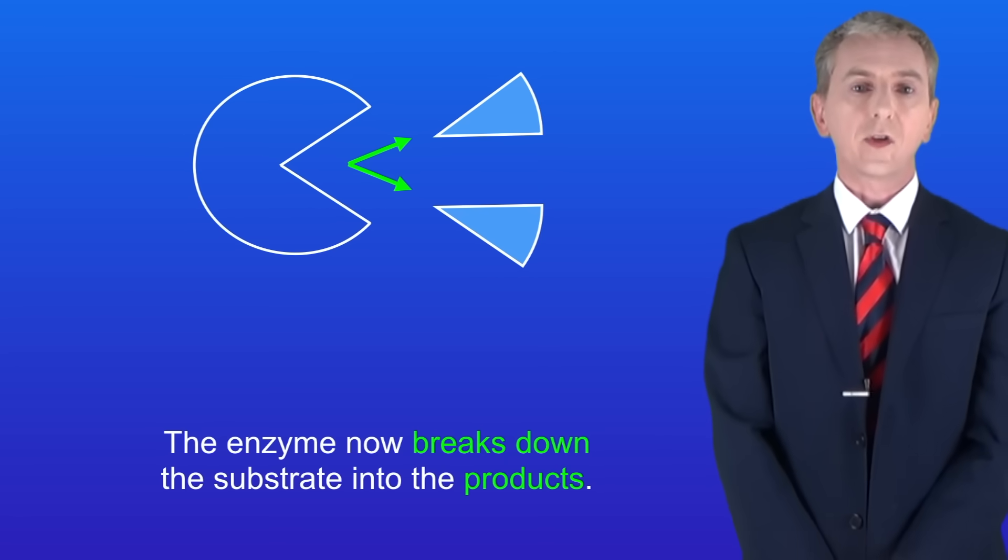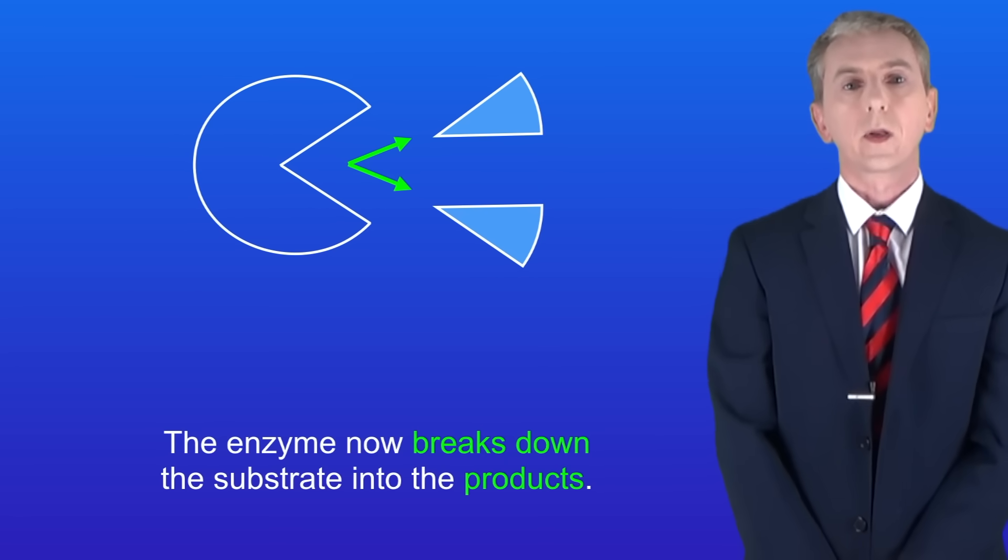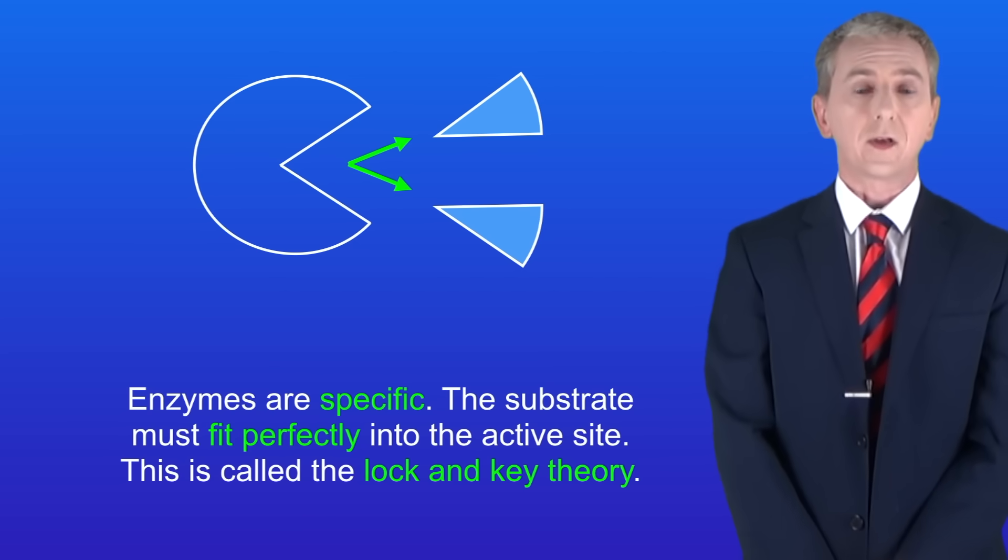The enzyme now breaks down the substrate into the products. Remember that enzymes are specific and that's because the substrate must fit perfectly into the active site. That's called the lock and key theory.